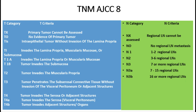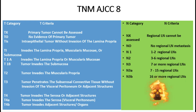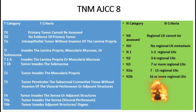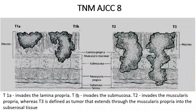Lymph node stations are similar to esophageal cancer: N1 is 1–2 nodes, N2 is 3–6 nodes, and N3 is 7 or more nodes. In gastric cancer, N3 is further divided into N3A (7–15 nodes) and N3B (16 or more lymph nodes). This is the pictorial representation — T1A invades the lamina propria.